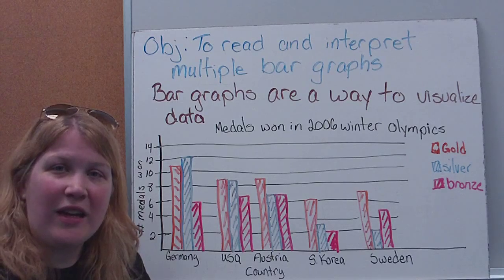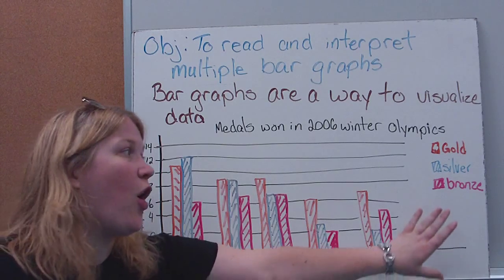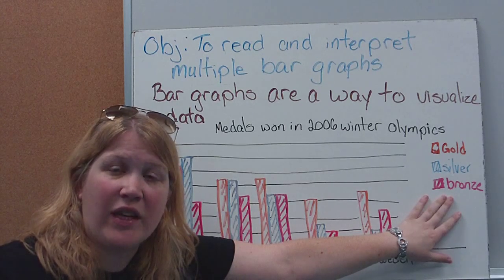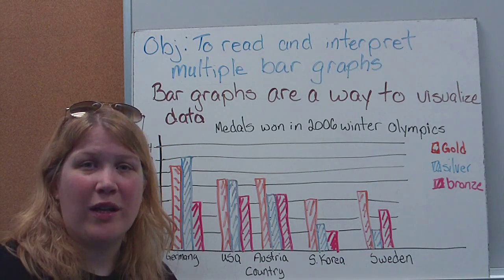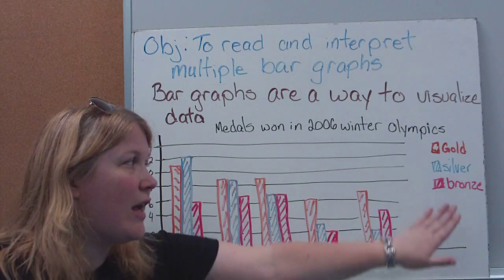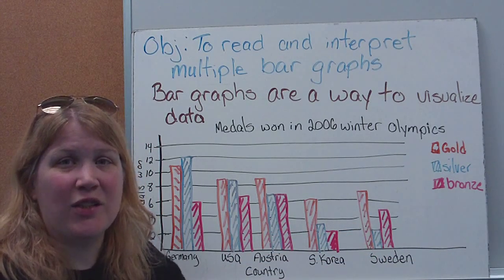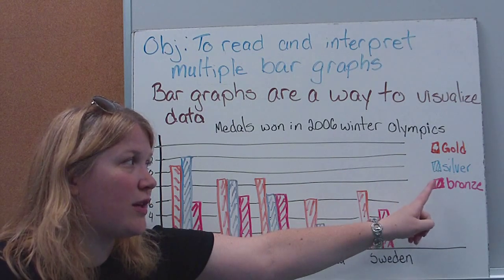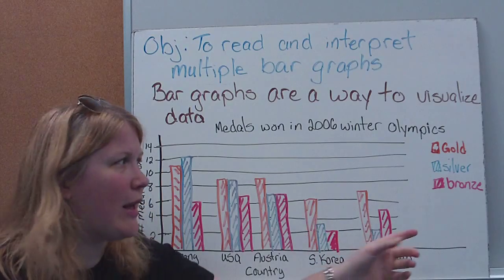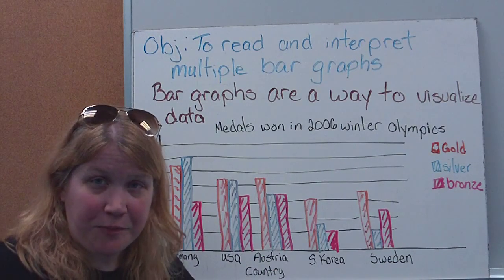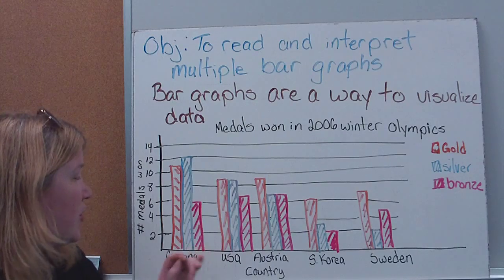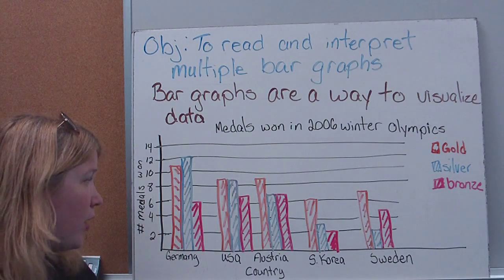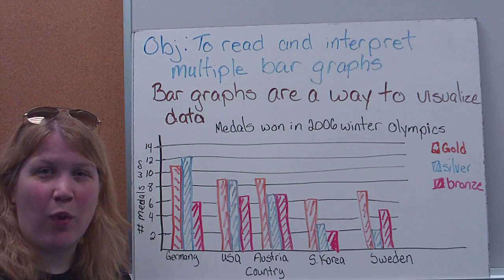The final thing graphs always need is what we call a key, especially for multiple bar graphs. You need a key to let people know what color or symbol represents each different thing. Here we're talking about medals, so that's three choices: gold, silver, or bronze. Each of those is color-coded. So if I look at Germany, I can tell you how many gold medals, how many silver, and how many bronze medals they won.